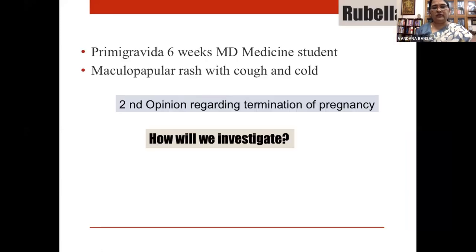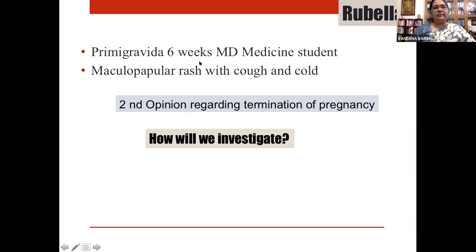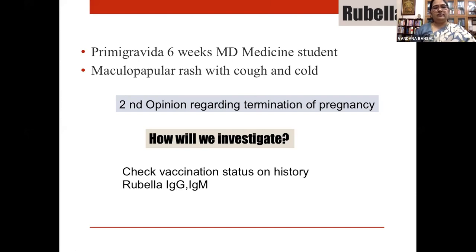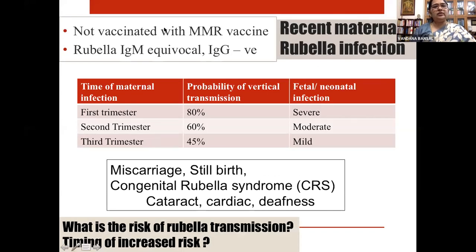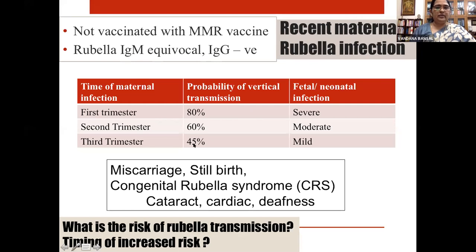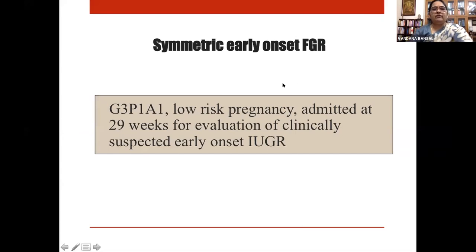For rubella: a primigravida with a maculopapular rash sought opinion. Vaccination status must be checked first. This patient was unvaccinated, IgM was equivocal, IgG negative, with a typical rubella rash. The risk of transmission in the first trimester is 80 percent and severe, potentially causing congenital rubella syndrome. The patient opted for termination of pregnancy.